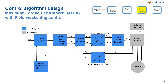Instead of showing you a basic implementation of field orientation control, I would like to show you how we design maximum torque per ampere — MTPA — with field weakening control. The output of the speed controller and the input of the current controller are embedded with MTPA and field weakening. The current references for Q and D-axis are calculated based on MTPA and field weakening algorithms to achieve maximum torque and minimum losses.